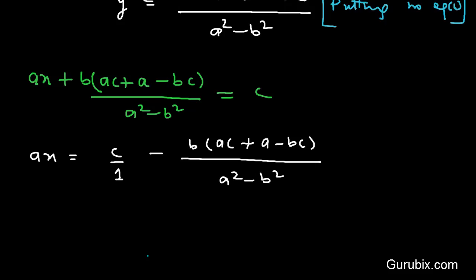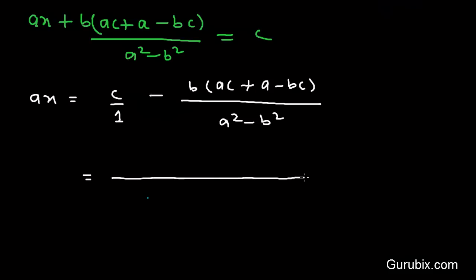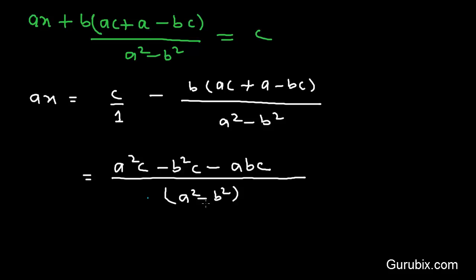We shall take the LCM, which gives us a-squared minus b-squared in the denominator. Multiplying out, we get c times a-squared minus b-squared c, minus abc, minus ab, plus b-squared c. We can then cancel the plus b-squared c with minus b-squared c.